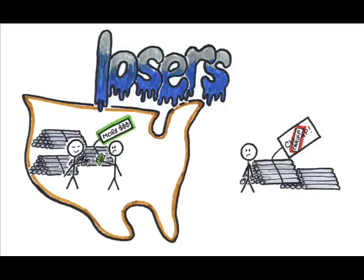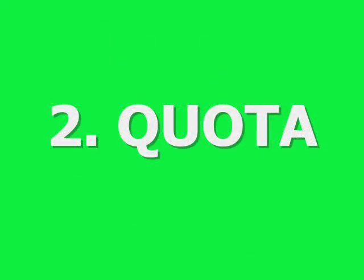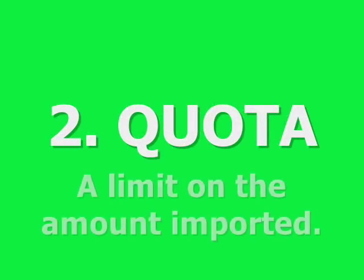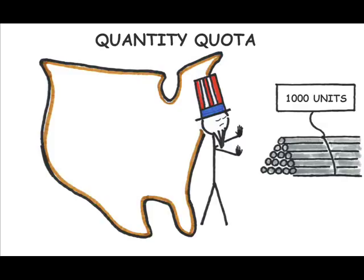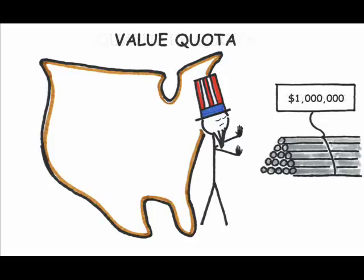The second type of trade restriction is a quota. Where the tariff was something of an indirect restriction — giving domestic consumers the incentive to buy the domestic product rather than the foreign product — the quota is a very direct restriction, putting limits on how much of the foreign product is allowed into our market. This could be either a quantity limit, say only 1,000 units imported, or a value restriction, for example allowing only $1,000,000 worth of the product to be imported.